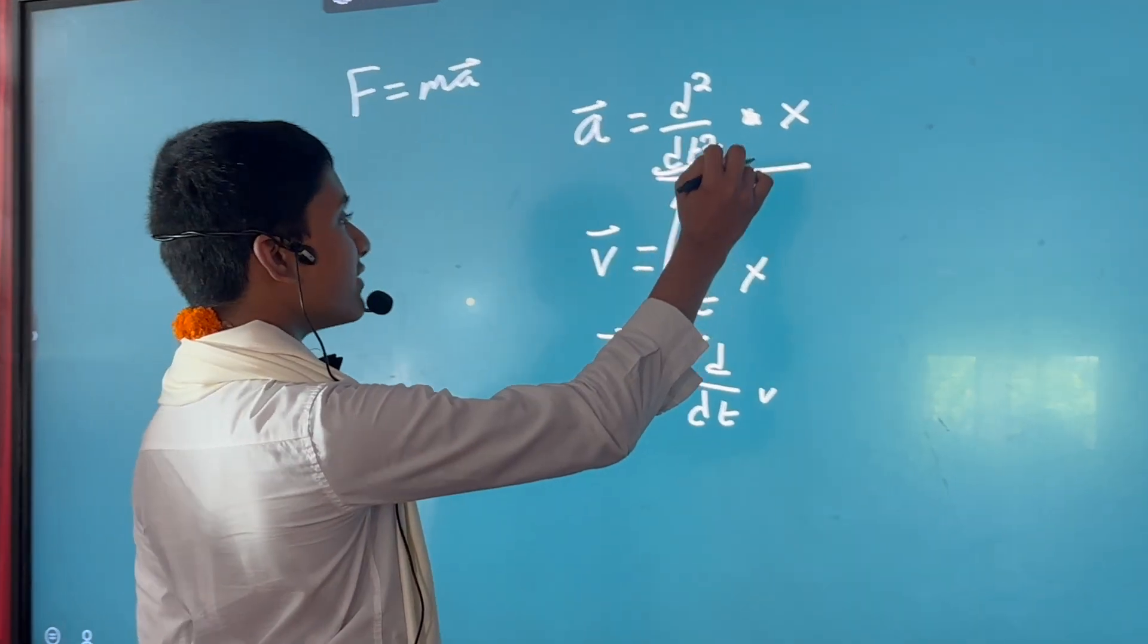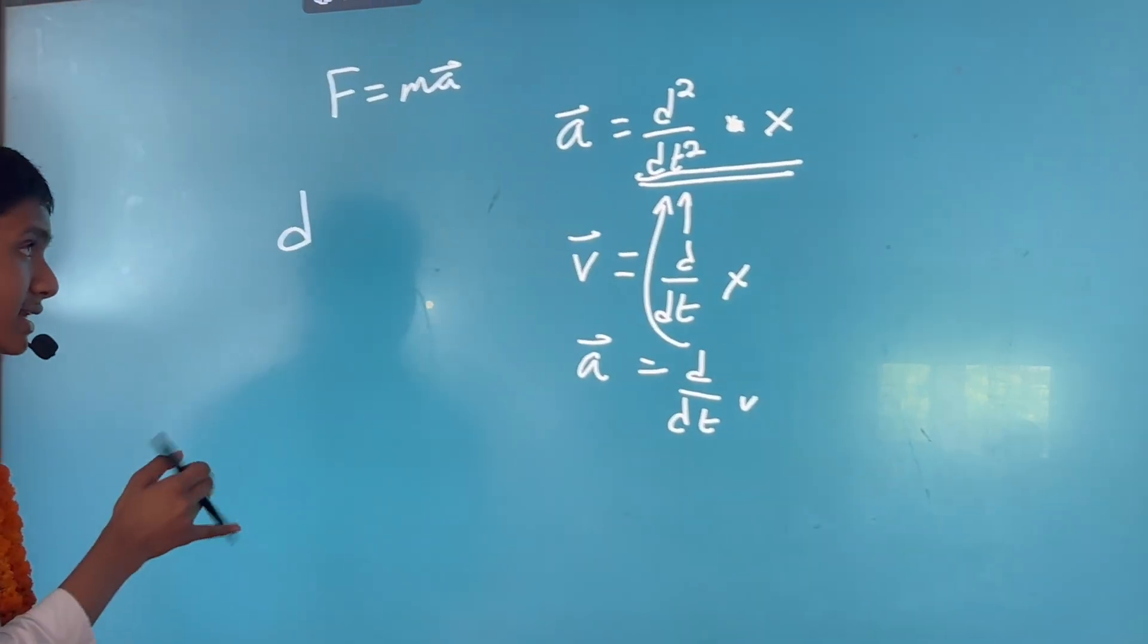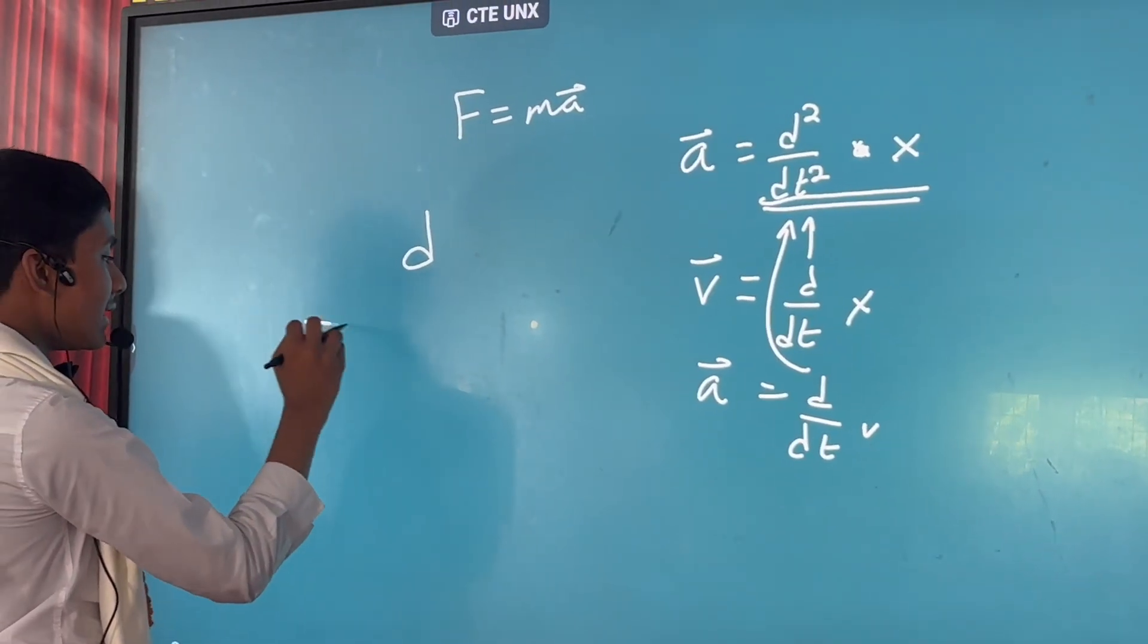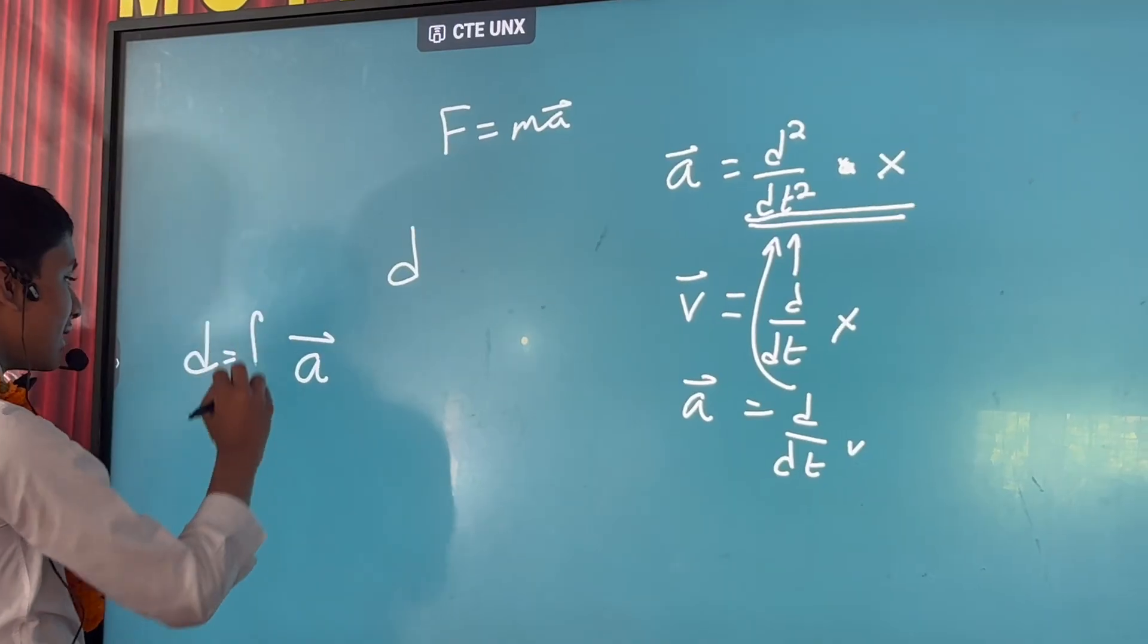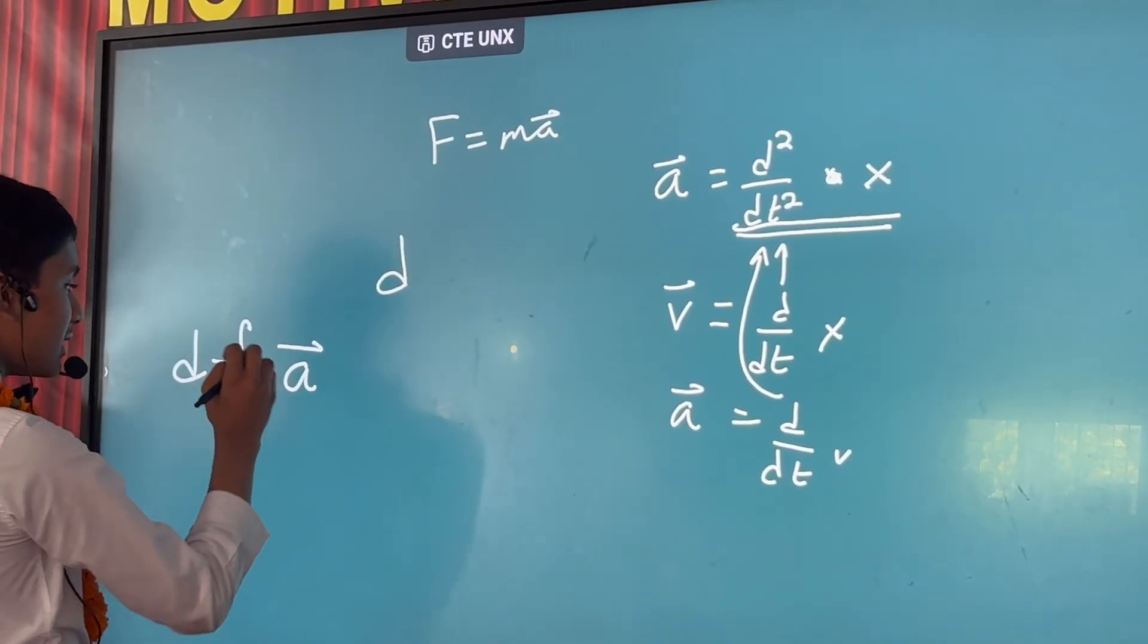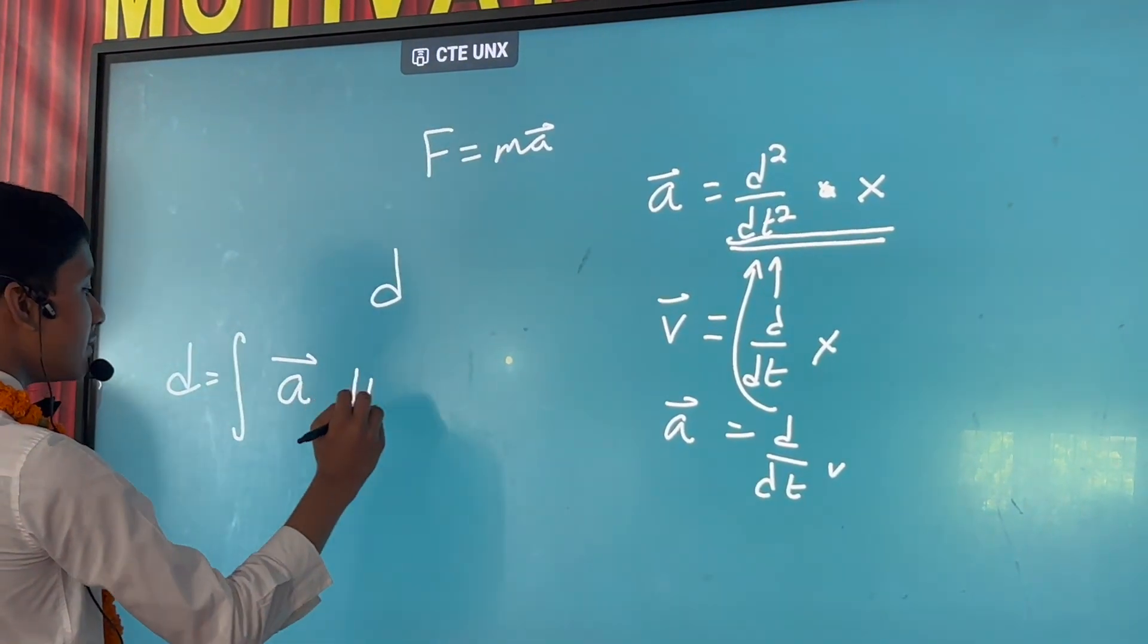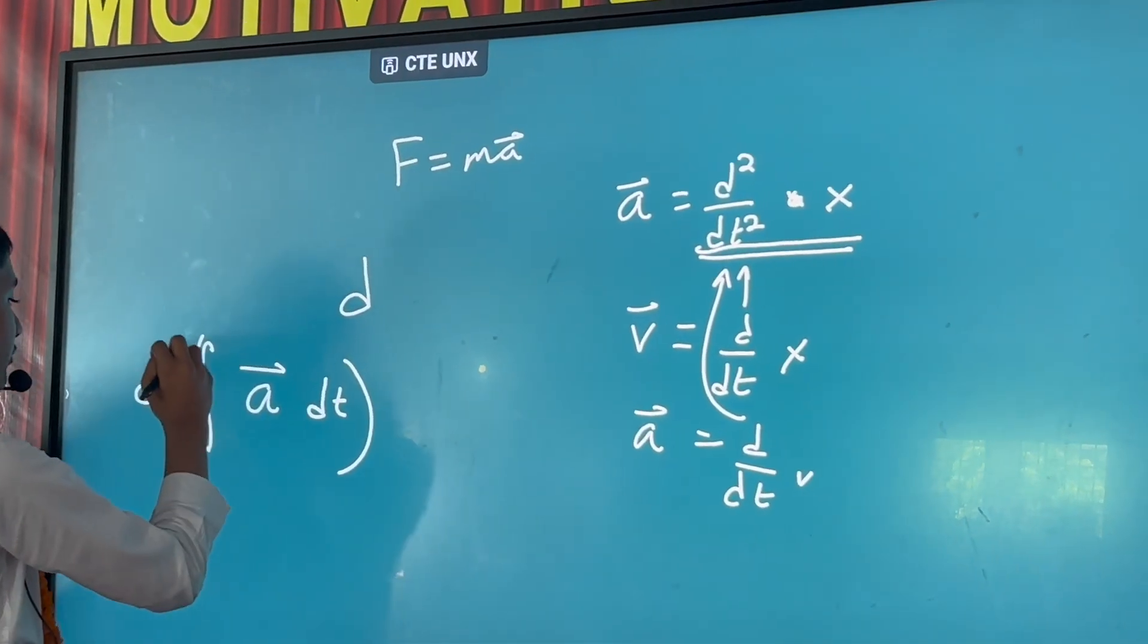What that means is that you can take distance and rewrite it as the integral of acceleration with respect to time, and then the integral of whatever you get out with respect to time.